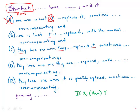They lose one arm then they are replaced - well the starfish aren't replaced, the arms are replaced, so that's also a pronoun error. And then they lose one arm it is quickly replaced, so that's just a count of the pronouns that eliminates two answers.